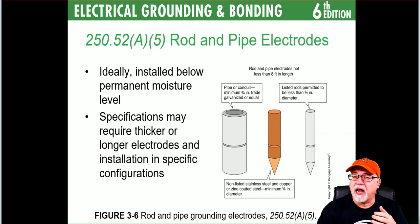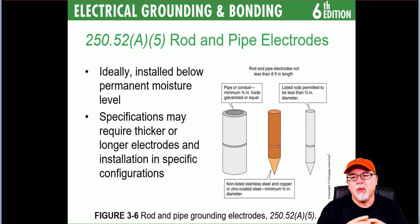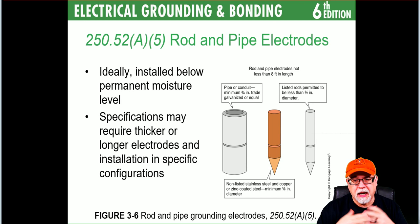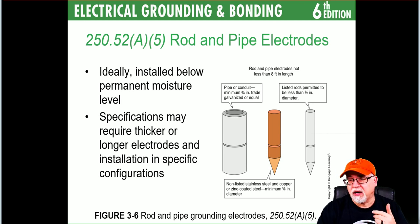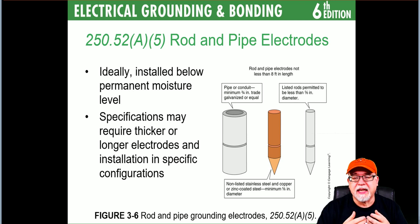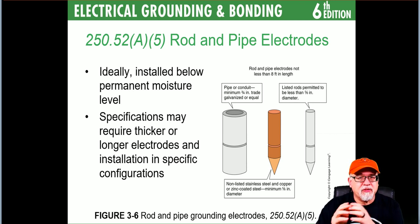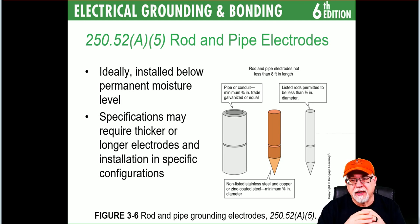250.52(A)(5) deals with rod and pipe electrodes. You can use a pipe or conduit — minimum three-quarter inch, galvanized or equivalent. More often than not, we drive ground rods, which can be copper, zinc-coated steel, or non-listed stainless steel. If you have a listed ground rod, it's permitted to be less than five-eighths of an inch in diameter. For non-listed ground rods, the minimum size is five-eighths of an inch. Listed ground rods have been evaluated — if they have a diameter less than five-eighths yet still got their listing, they're okay.